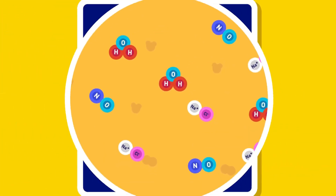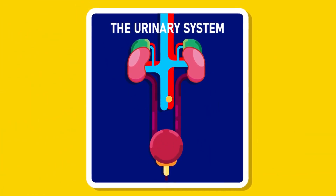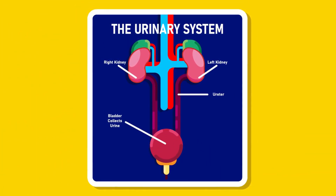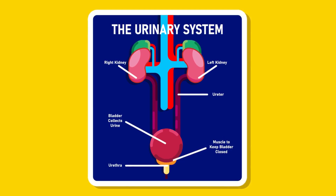The Urinary System. The human urinary system consists of the kidney, ureter, urinary bladder, sphincter muscle, and the urethra.